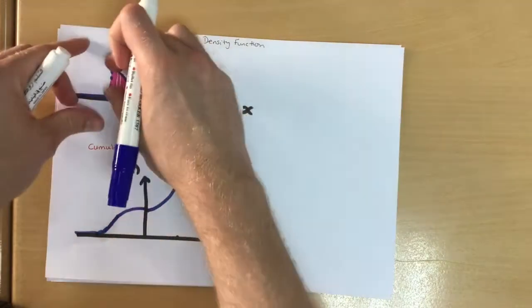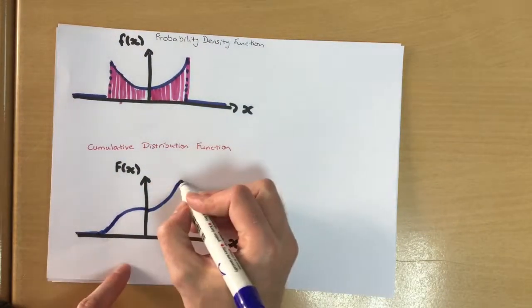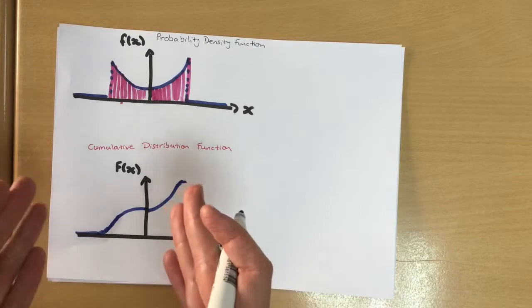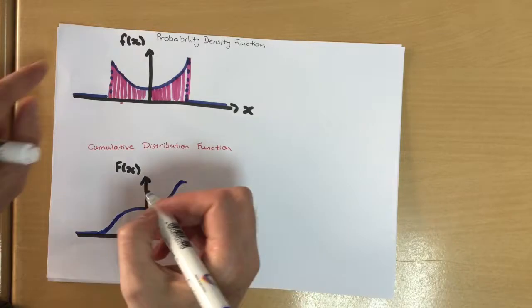And it's going to stop at that point there once everything's been included. So this graph here is all these bits of area added together, getting bigger. Now, if you can guess where this stops, the maximum point of this. That's right. It's a one.